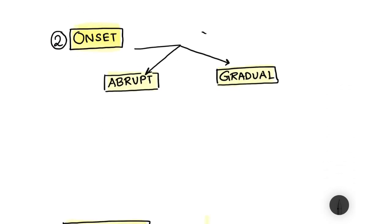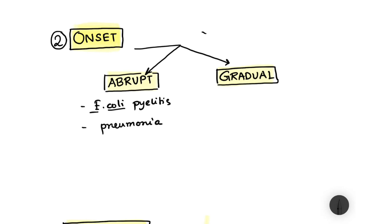The onset of fever can be abrupt or gradual. Abrupt onset means all of a sudden the body heats up and fever develops. This is generally seen in E. coli pyelitis and pneumonia — these are the most common abrupt onset fevers.